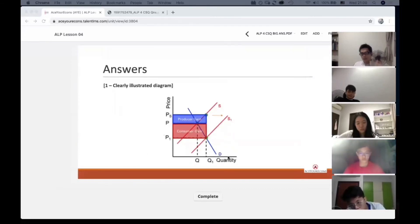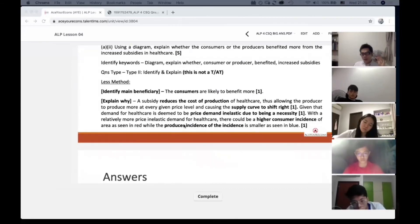So the diagram will give you the fourth mark, and the fifth mark goes to the explanation. The consumer will enjoy higher consumer incidence as compared to the producer.